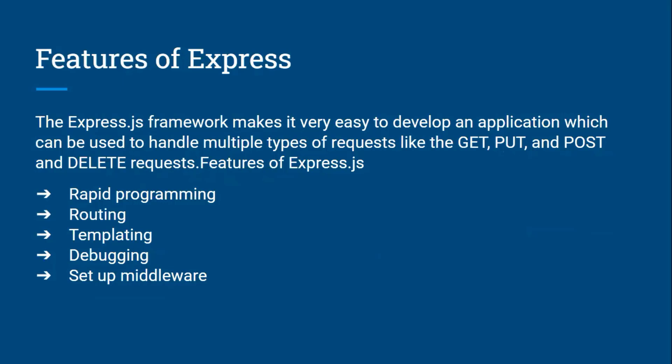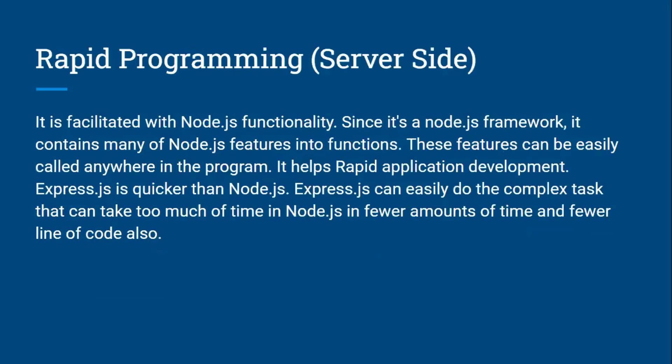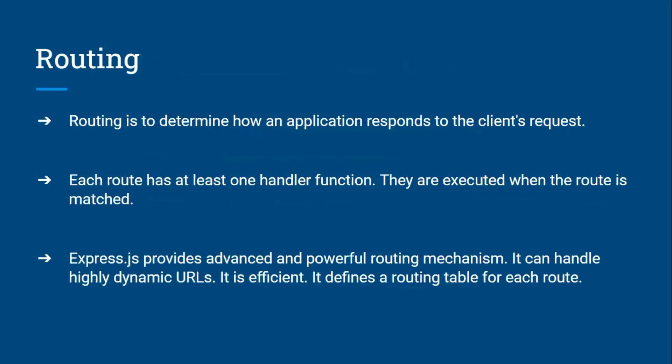Express makes development very easy. Its features include rapid programming, routing, templating, debugging, and a set of middlewares. Rapid programming on the server-side is facilitated with Node.js functionality. Since it is a Node.js framework, it contains many Node.js features in functions that can be easily called anywhere in the program. Express is quicker than Node.js — it can complete complex tasks that would take too many lines of code in Node.js in less time and fewer lines of code.